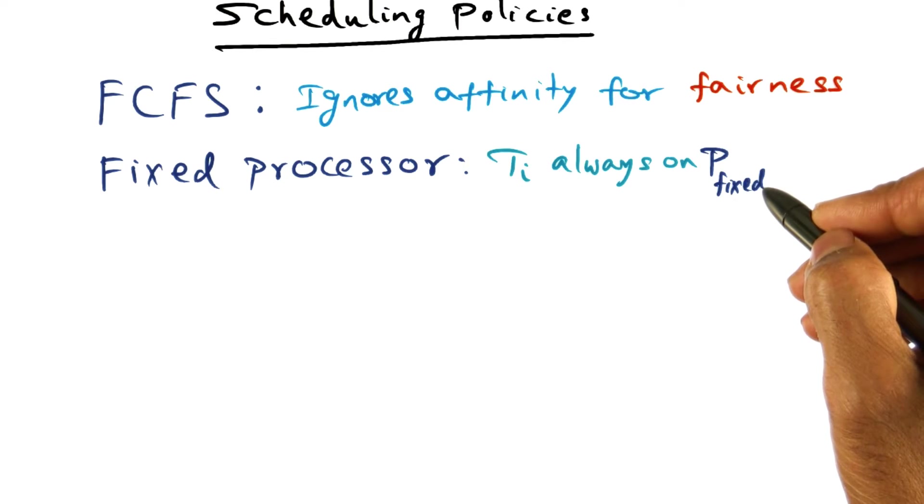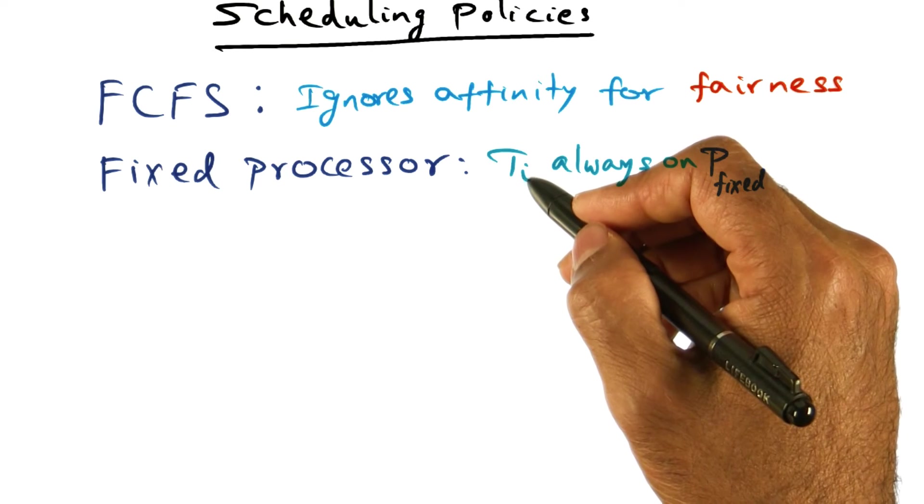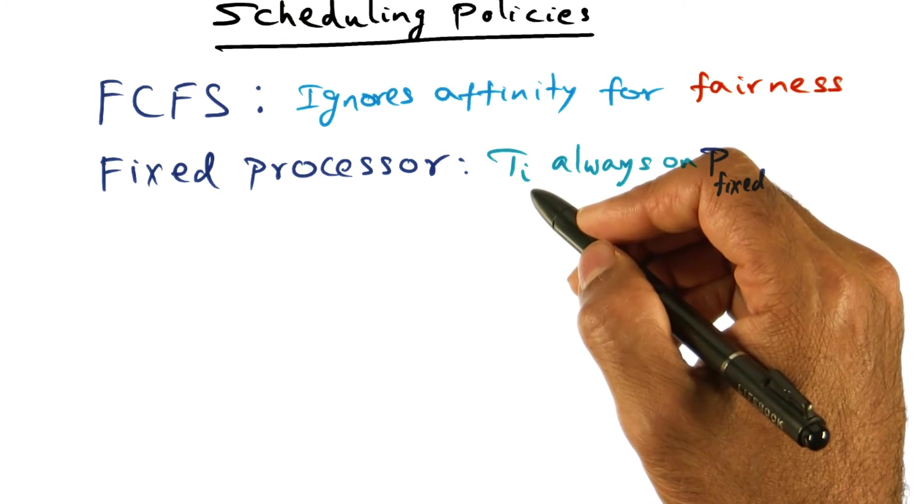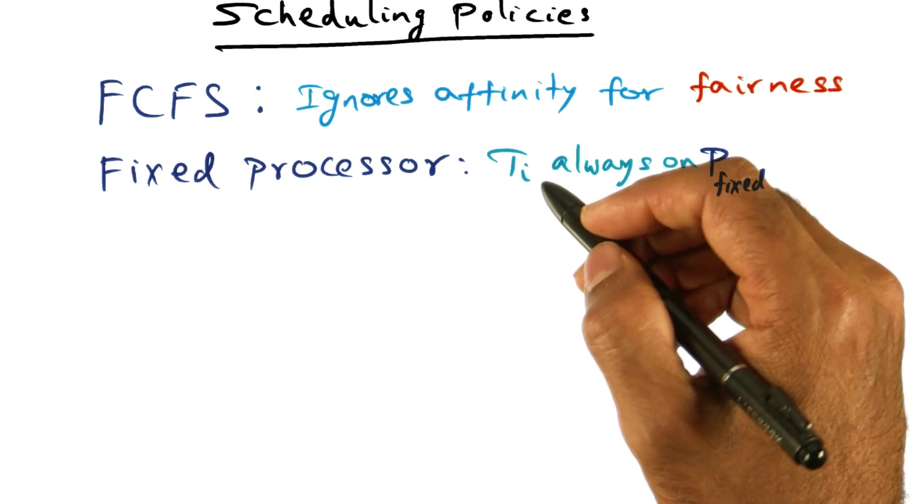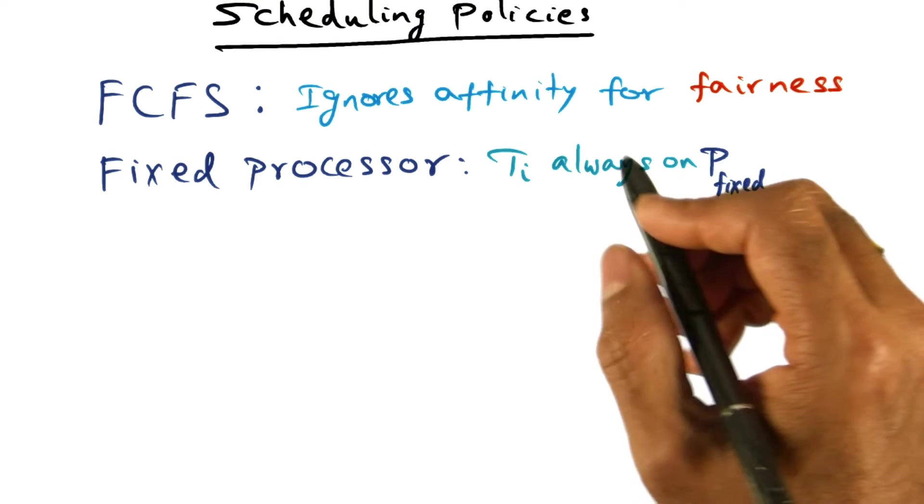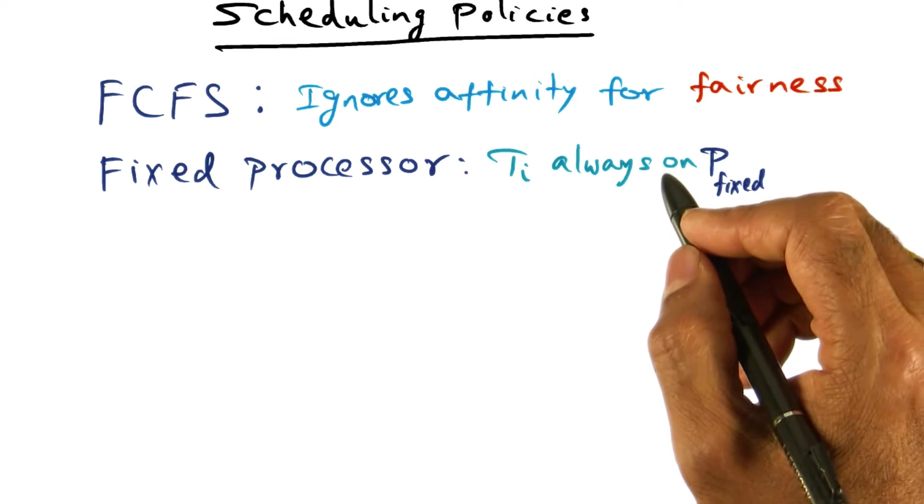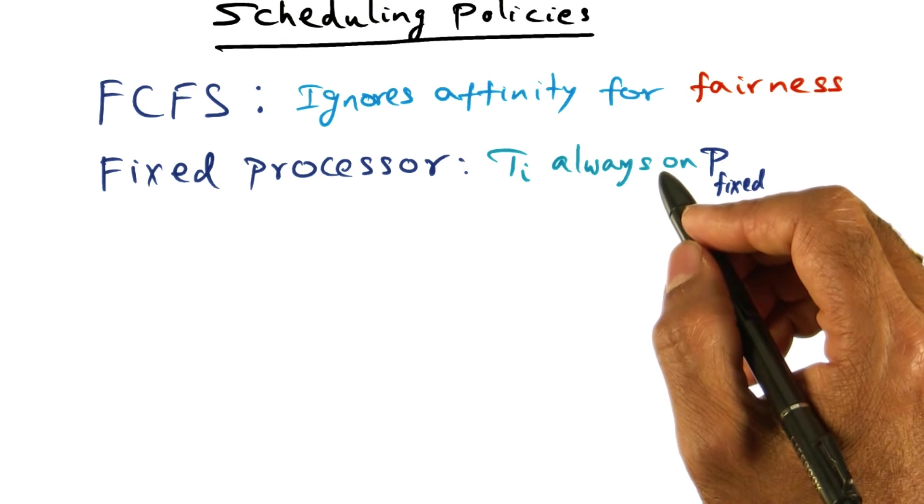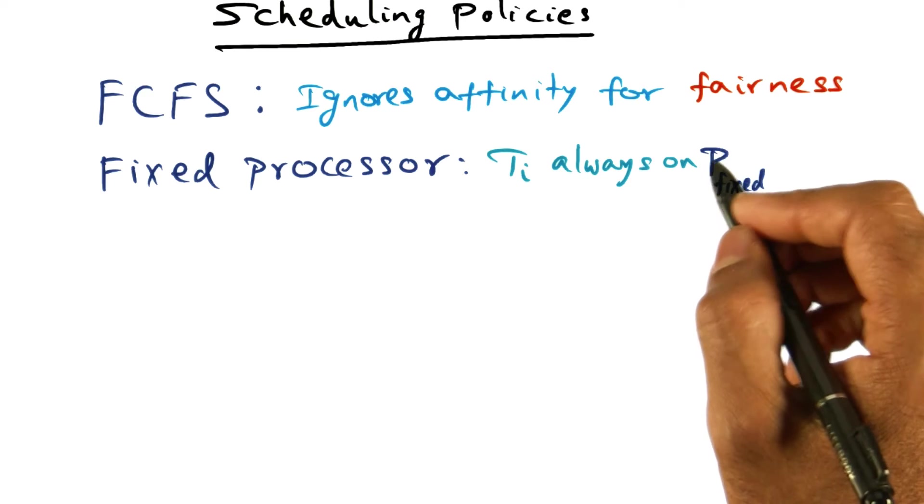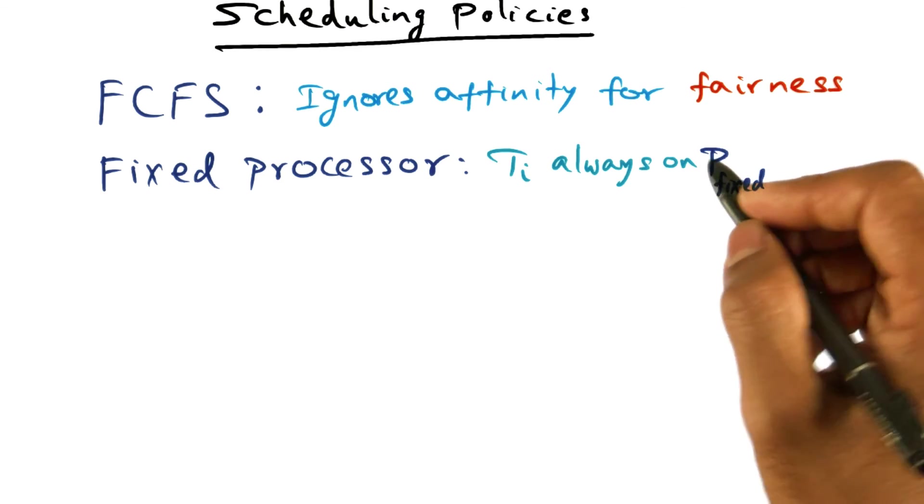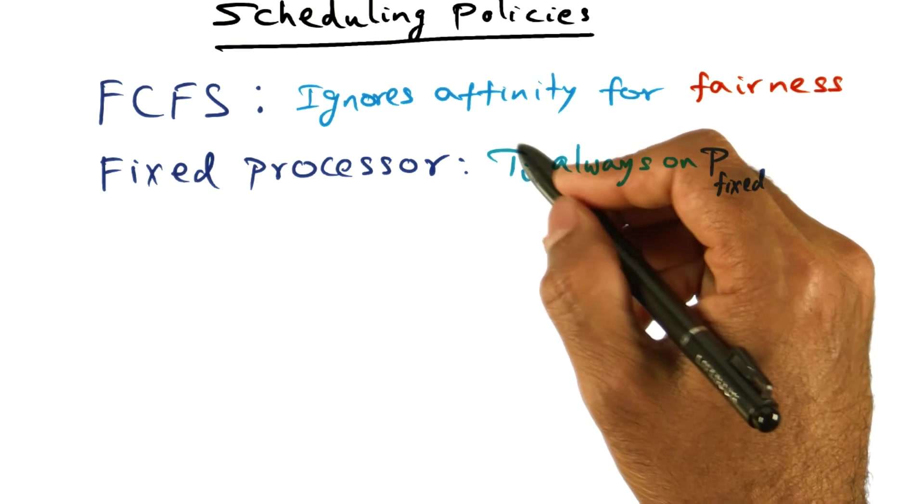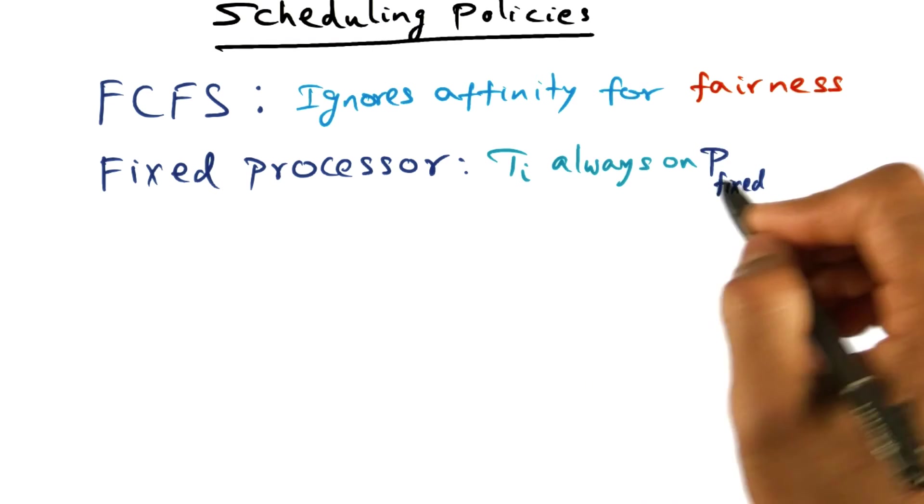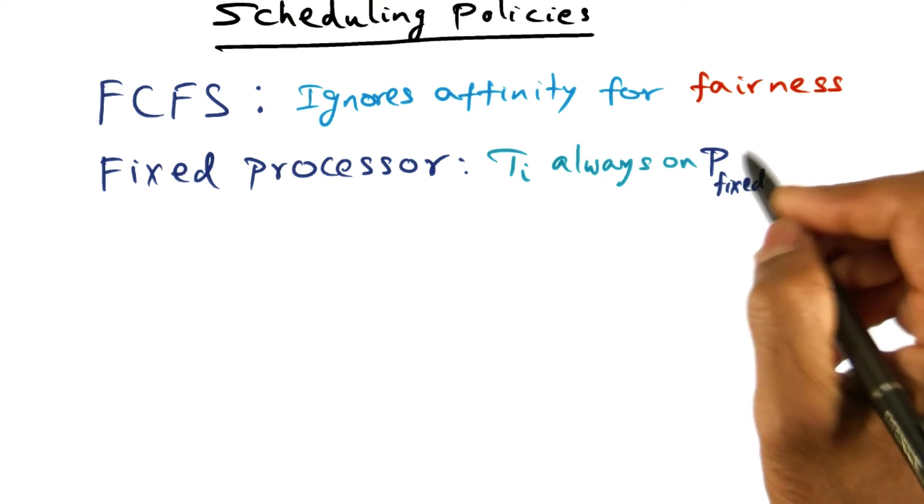The way we choose the initial processor on which to schedule TI may depend on the load balance, making sure that all the processors in the multiprocessor are equally stressed in terms of using the resources for running the available threads that are there in the system. That's how I pick a particular processor. But for the life of this thread, the processor on which TI is going to run is always fixed. That's the Fixed Processor scheduling.